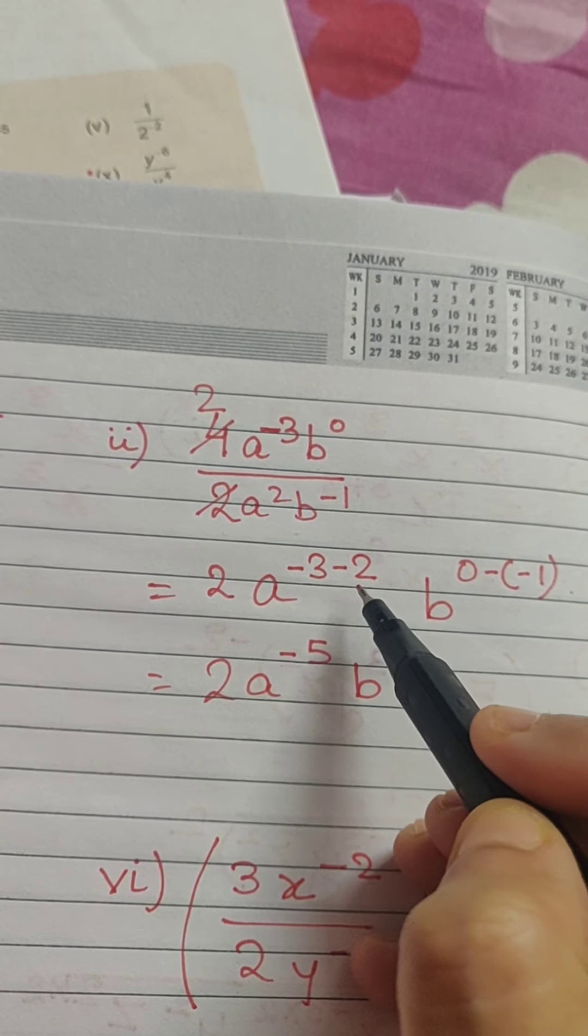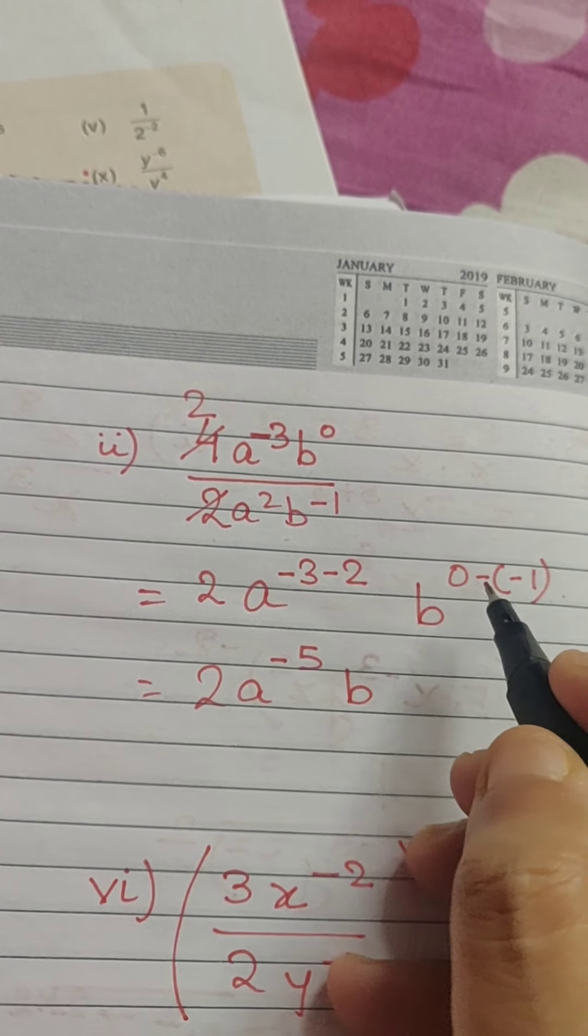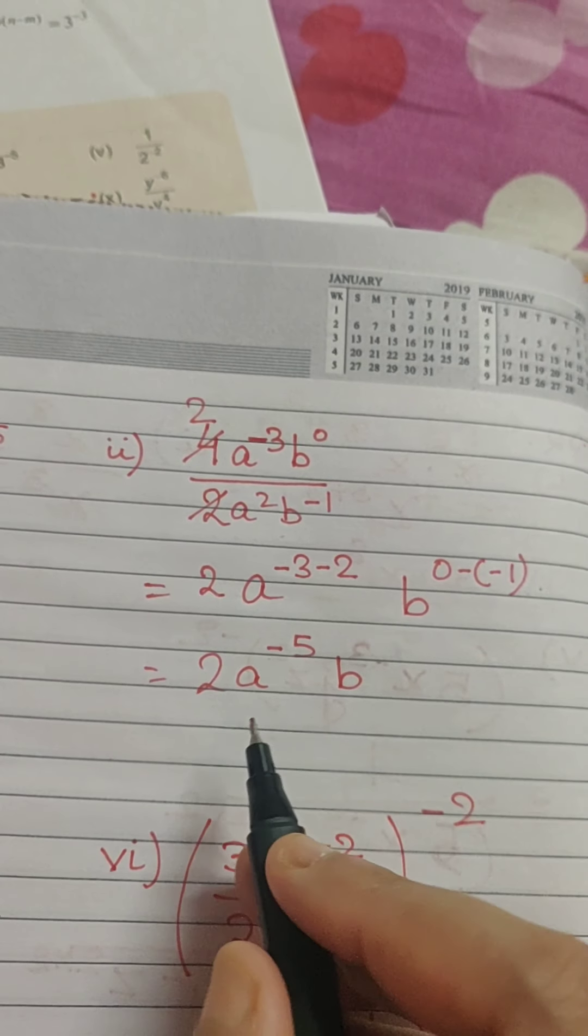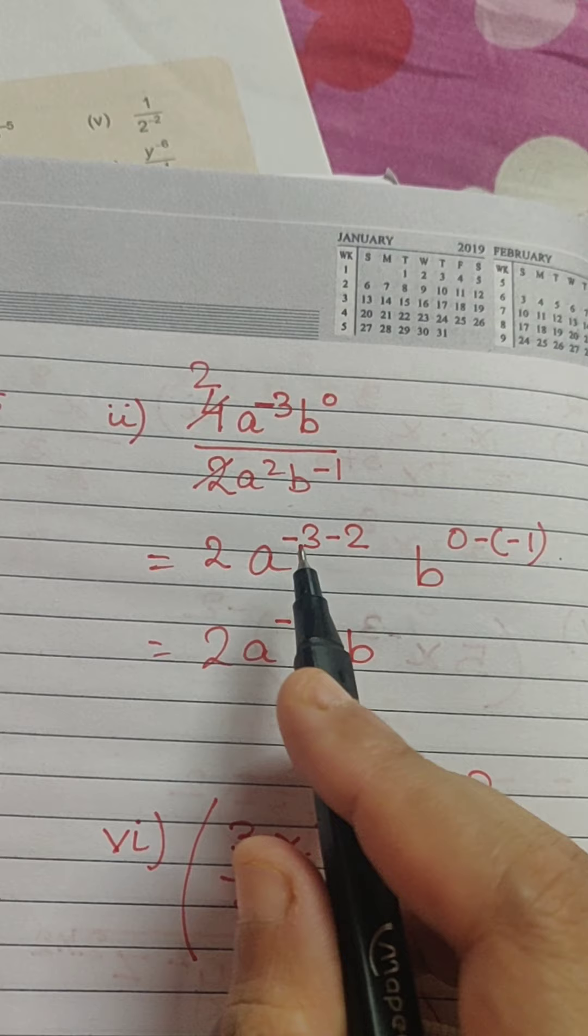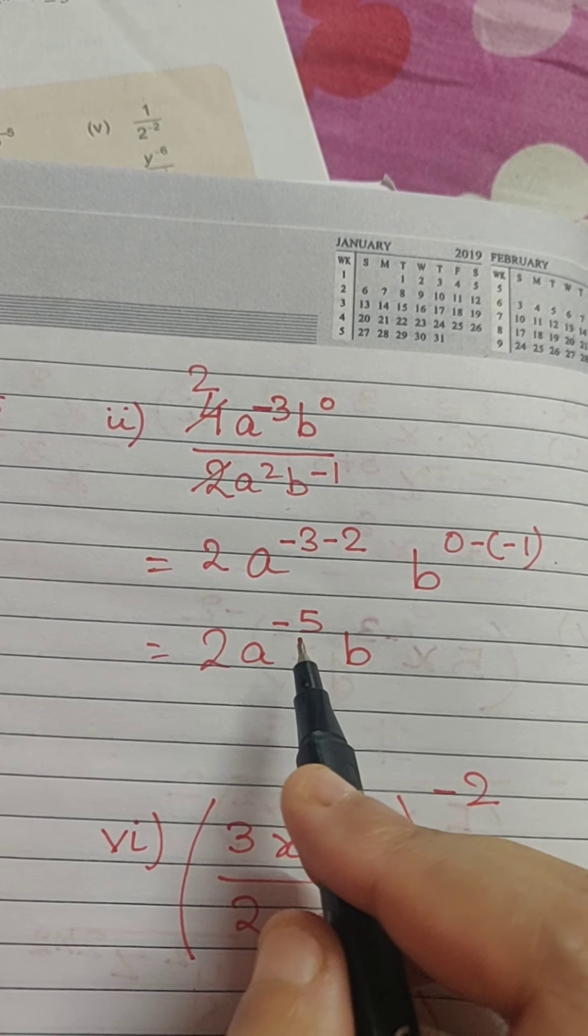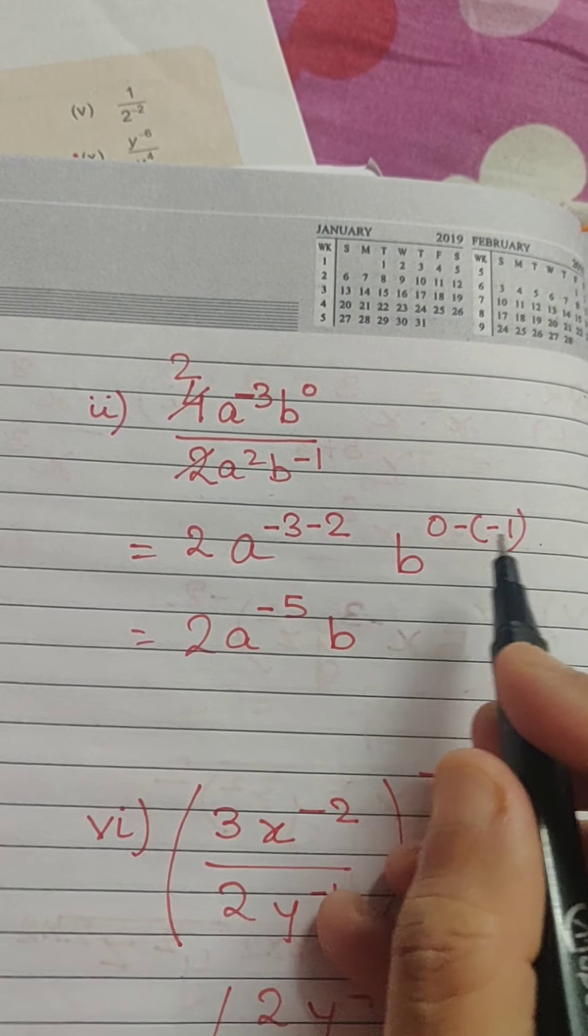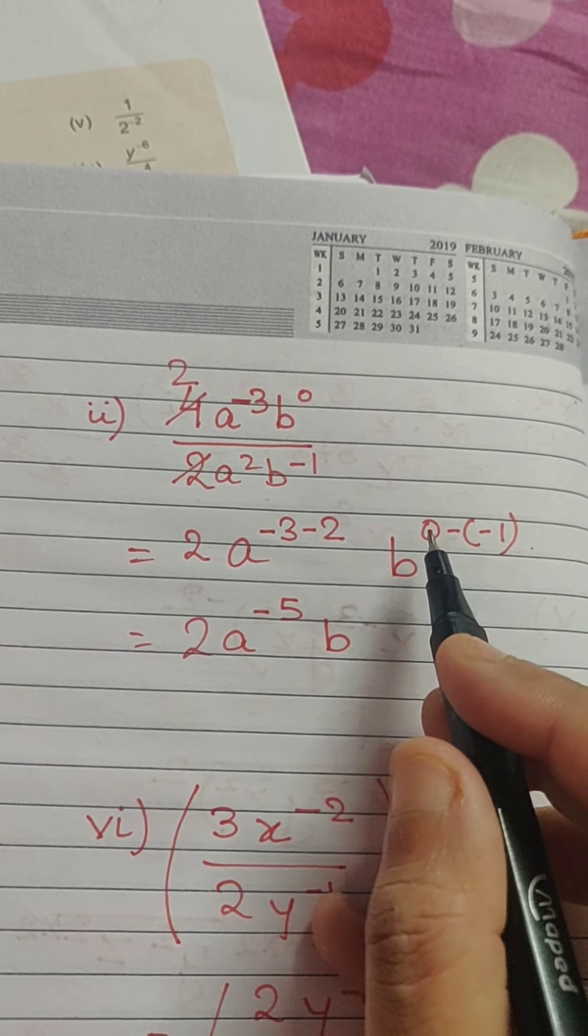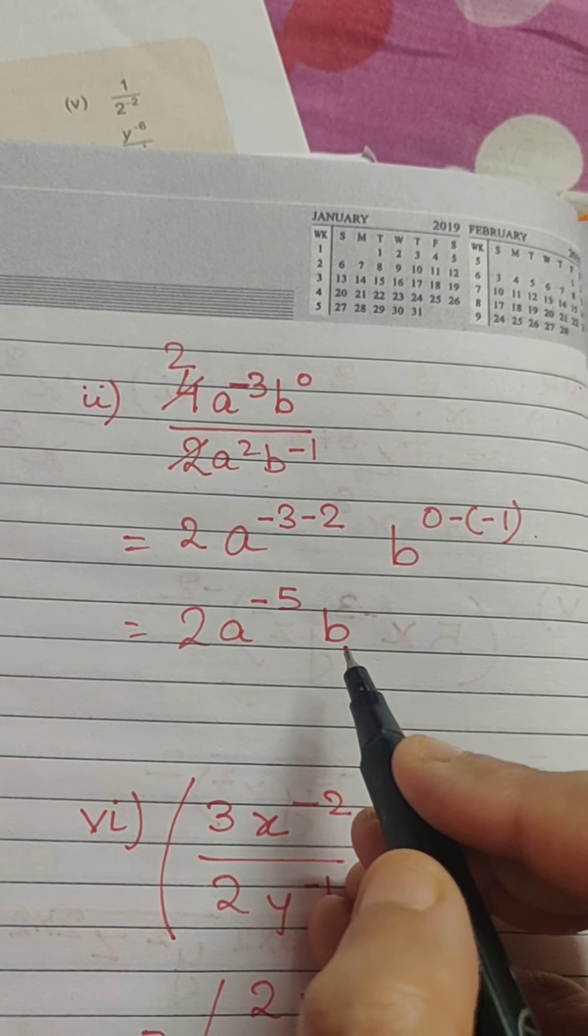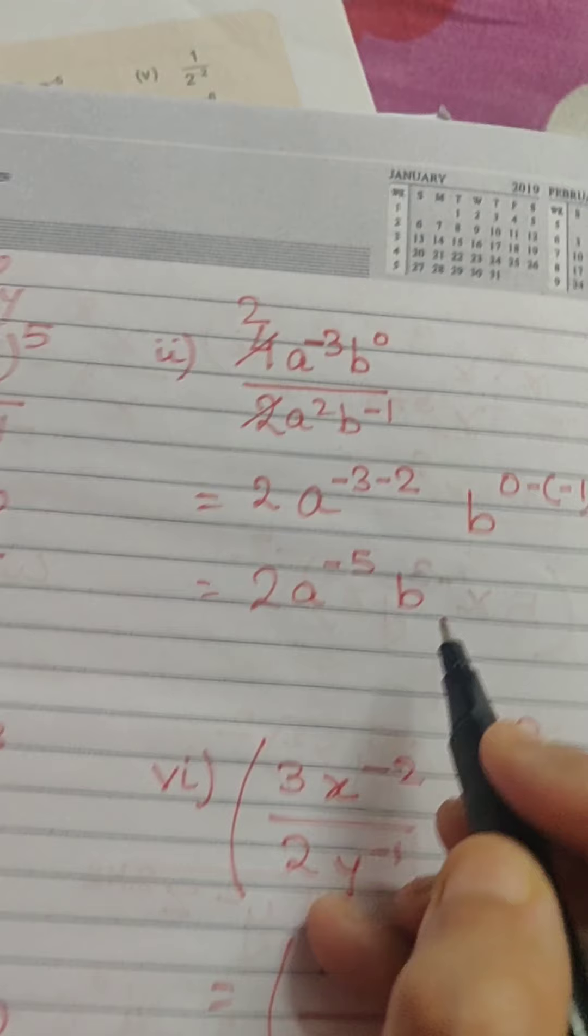We write a minus 3 minus 2 and in case of b we write the base and we subtract the exponents. So, what we get is 2 a minus 3 minus 2 gives us minus 5 into b 0 minus 1 or 0 which becomes 0 plus 1 or it gives us only b. So, the answer is 2 a to the power minus 5 into b.